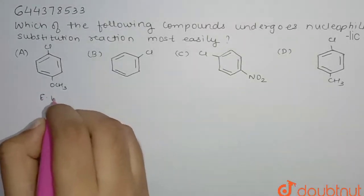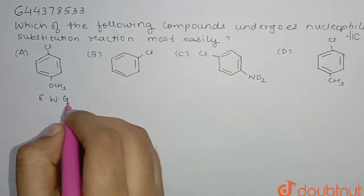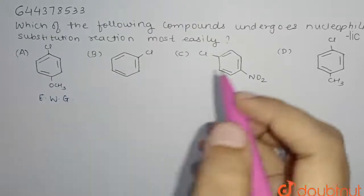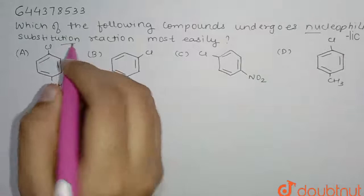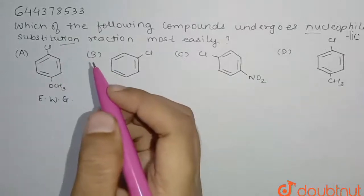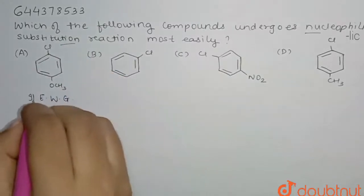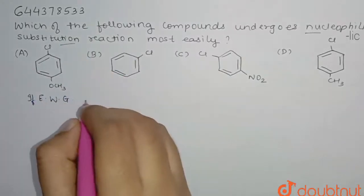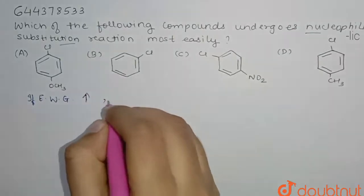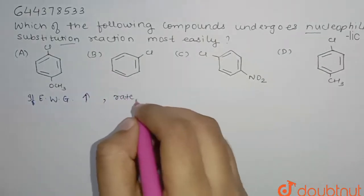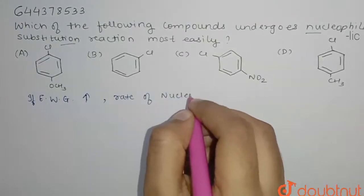We can see that when an electron withdrawing group is present in a molecule, it increases the rate of nucleophilic substitution reaction. So, if an electron withdrawing group is present, it increases the rate of nucleophilic substitution reaction.